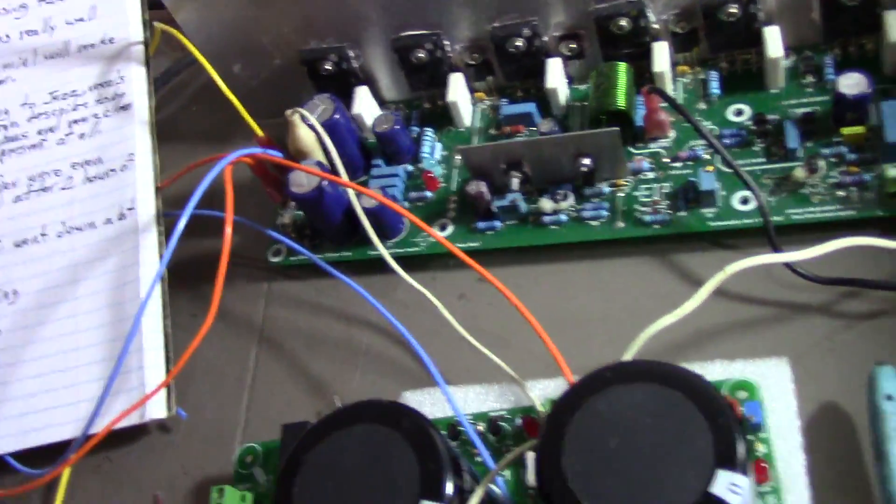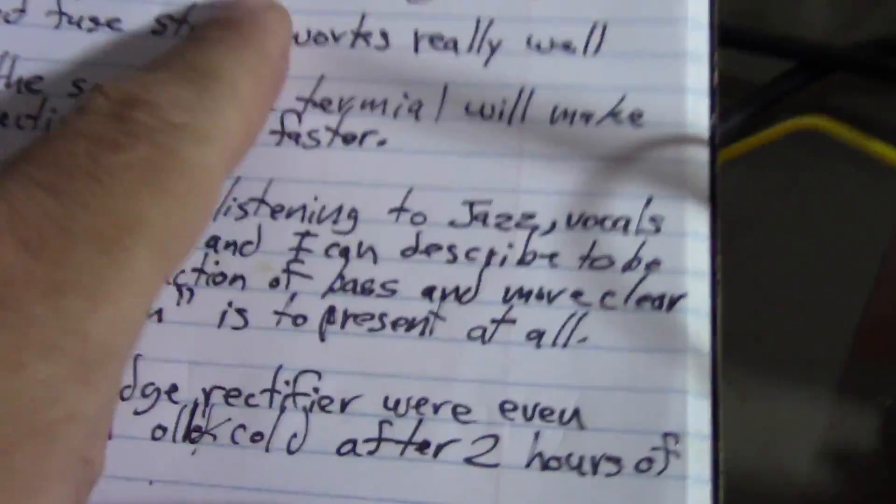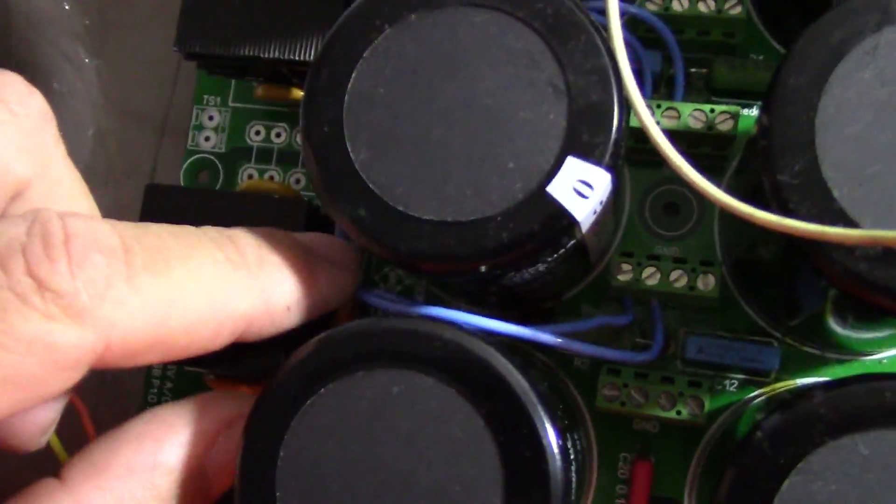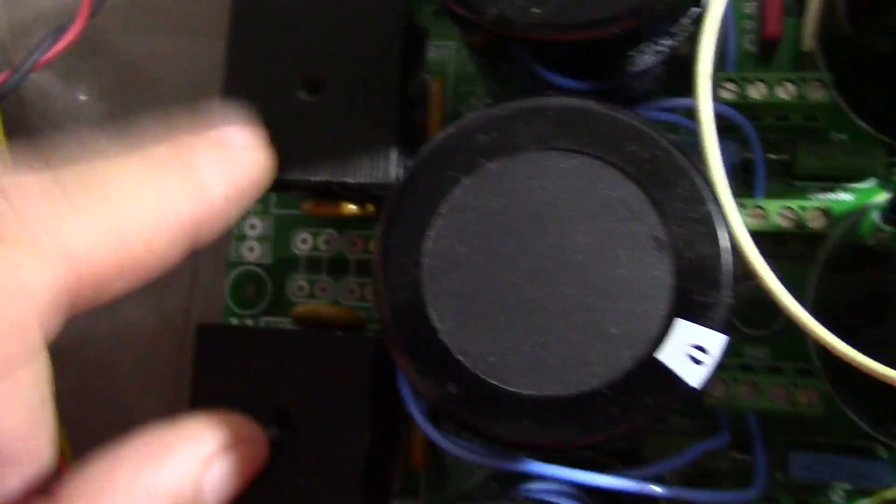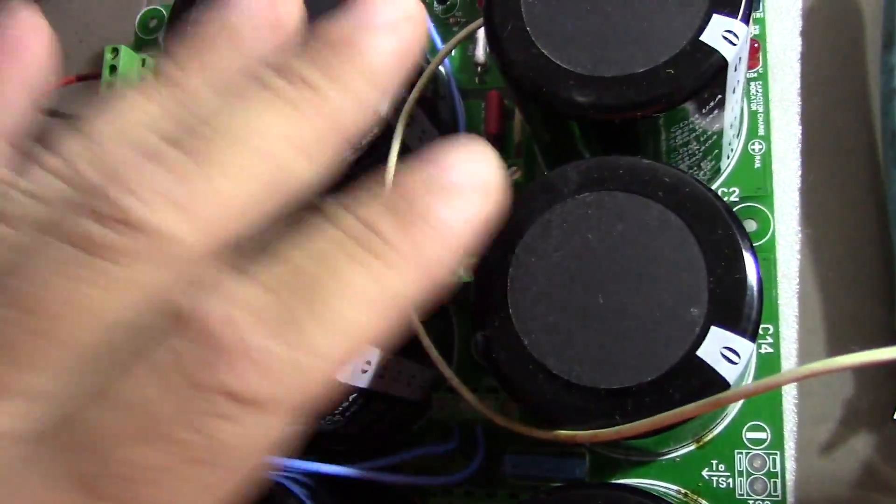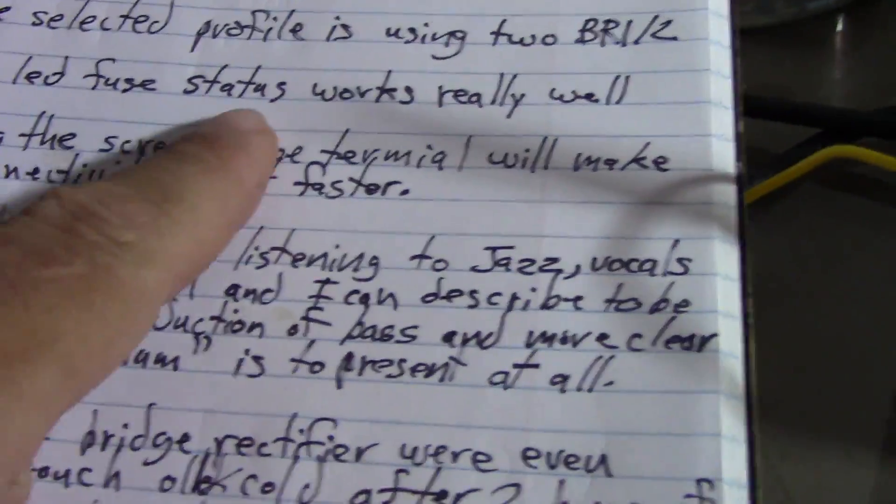The selected profile uses two bridge rectifiers. You can see the blue wires are connected to the center as star ground for the power supply. The LED fuse status works really well.